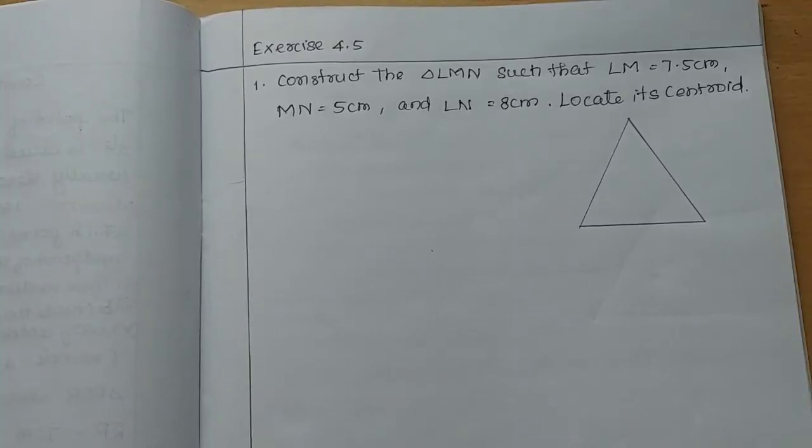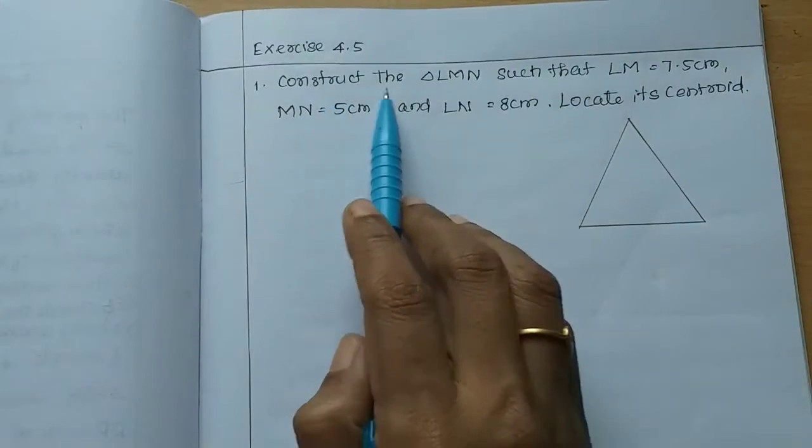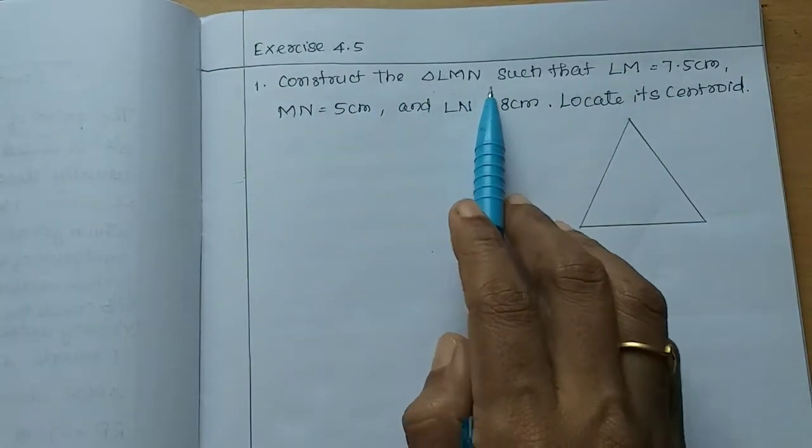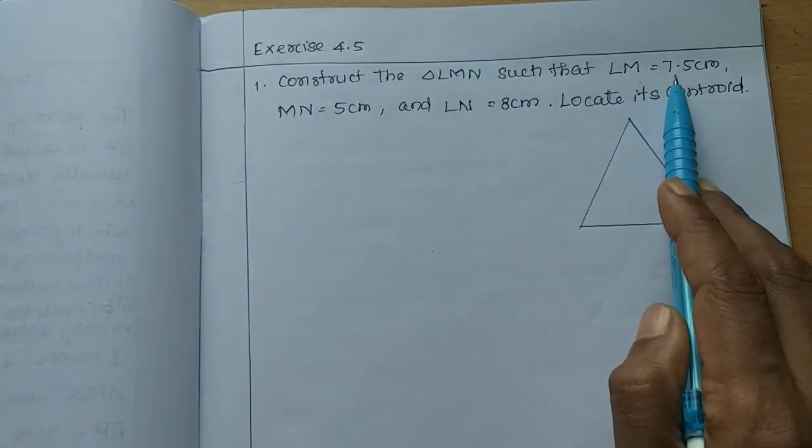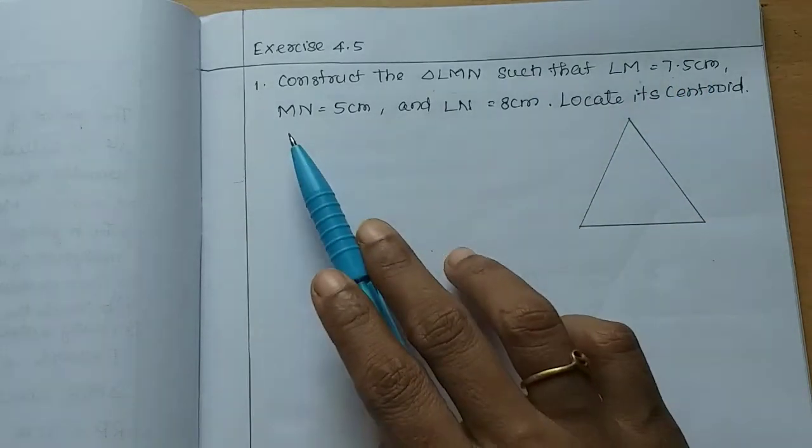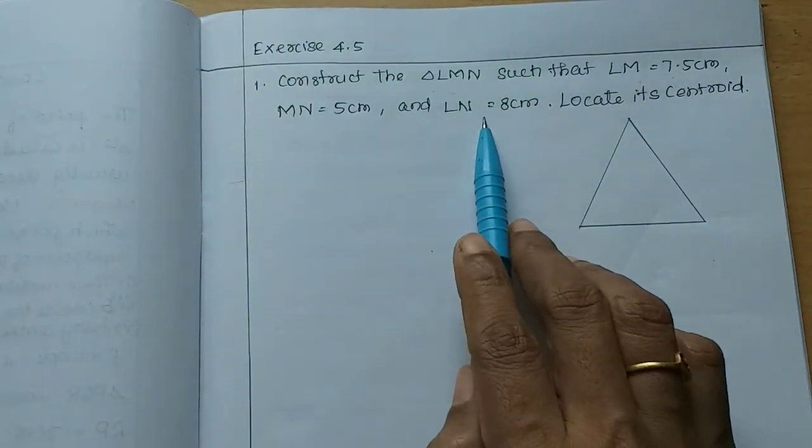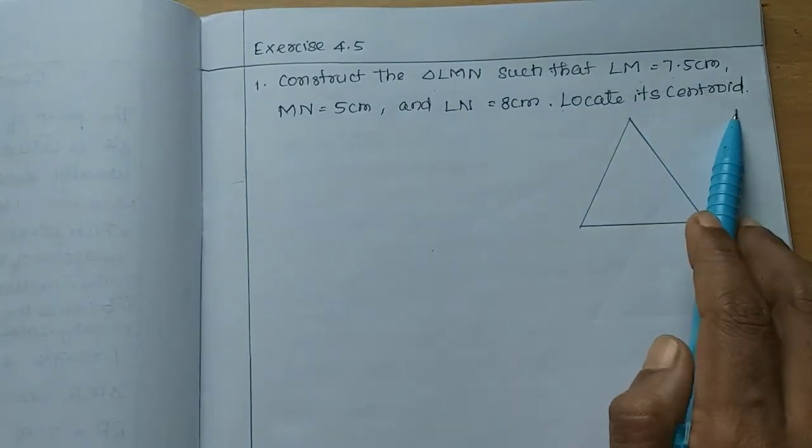Hi students, in this video, let's look at my exercise in 4.5. Construct the triangle LMN such that LM is 7.5 cm and MN is 5 cm and LN is 8 cm and locate its centroid.